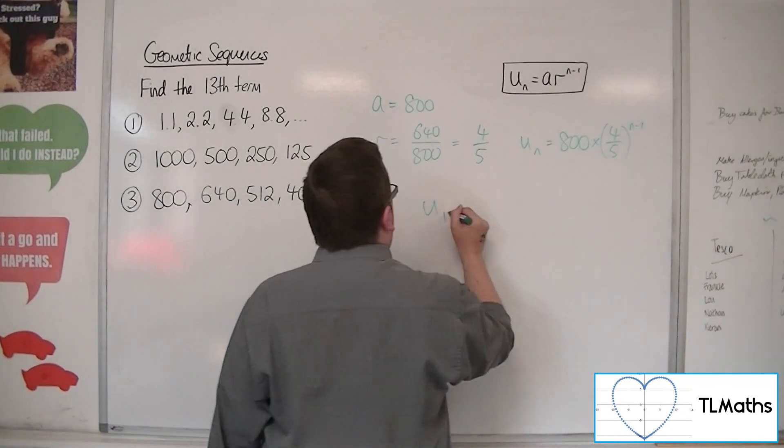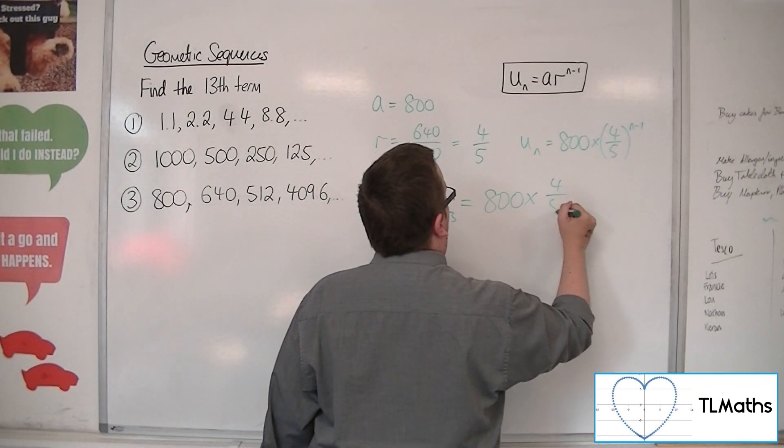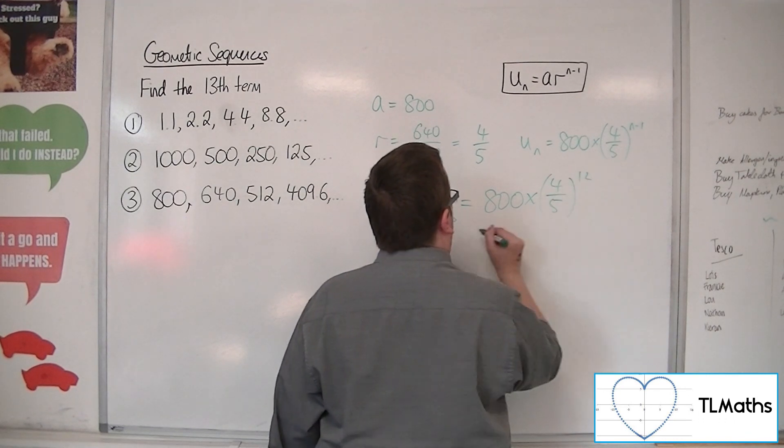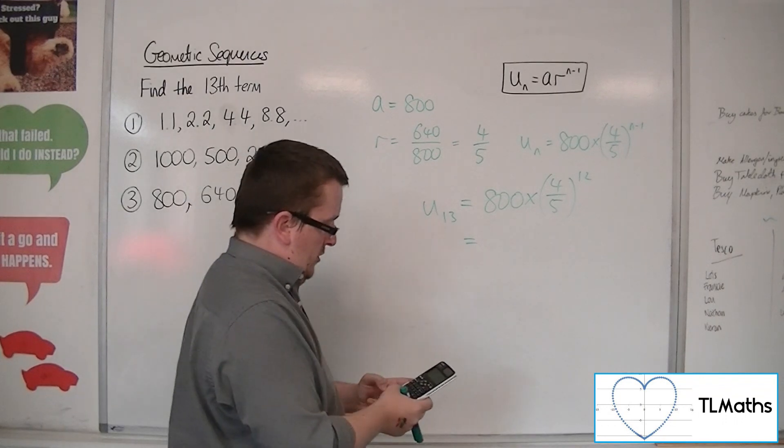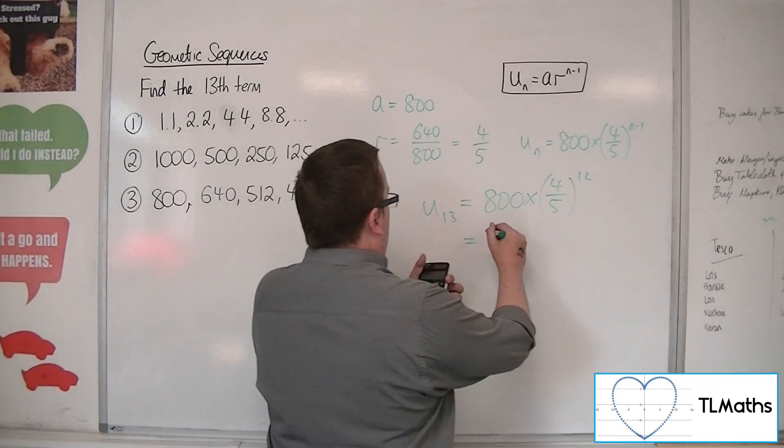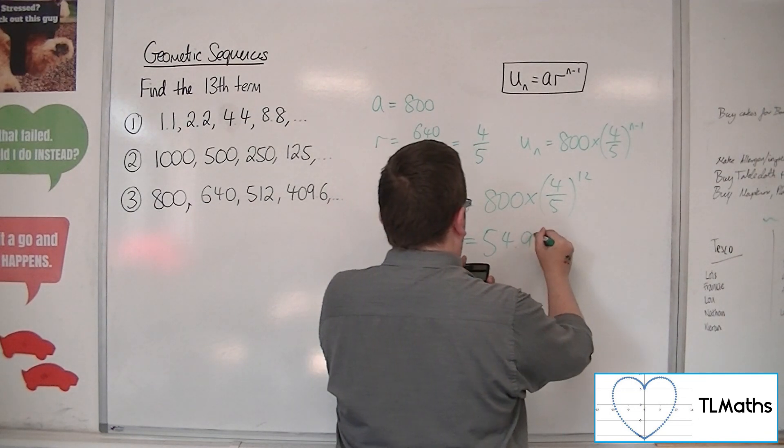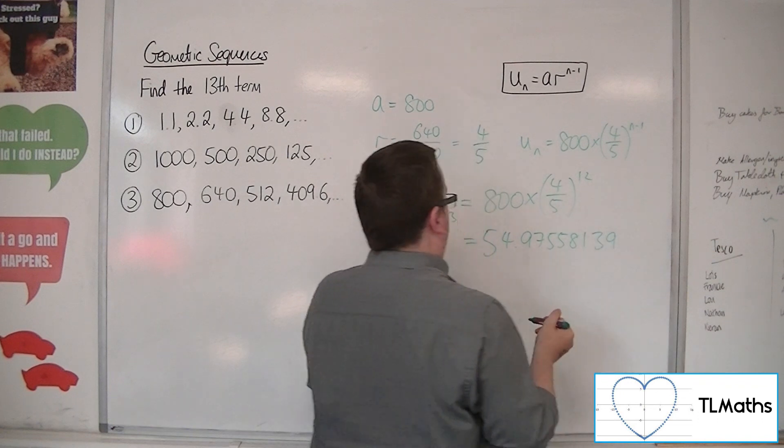So the thirteenth term is 800 times 4 fifths to the 12. So 800 times by 4 fifths to the 12 is 54.97558139.